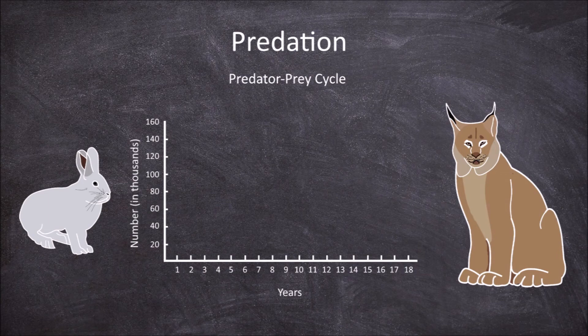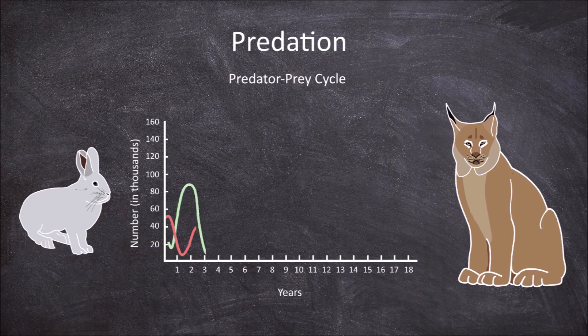When the population of the predator, the Canada lynx, which is the red line, is low, the population of the prey, the snowshoe hare, which is the green line, grows as there is less predation. The increased population of prey increases the food supply for the predator, so the lynx population grows, but this in turn diminishes the food supply, so the snowshoe hare population declines.